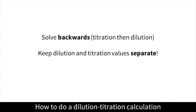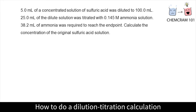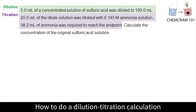The easiest way is to work out which bits of the question are on dilution and which bits are on titration. Circle and label them, and only look at those numbers when you're solving that part. Here's an example of a dilution-titration calculation. First, let's separate the dilution and titration parts. We'll solve the titration first, then the dilution.